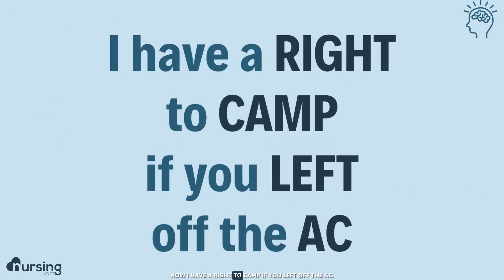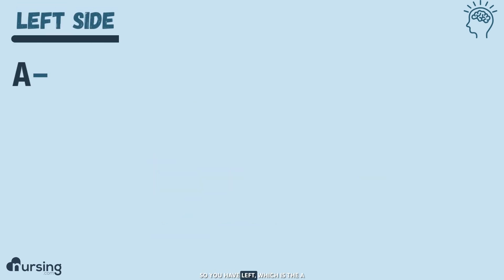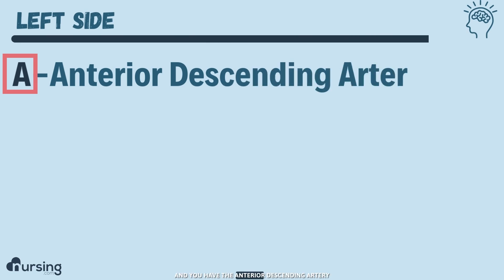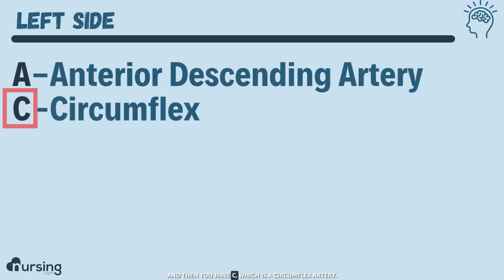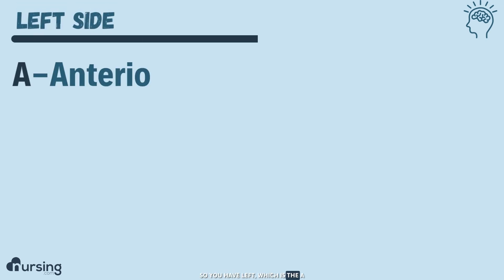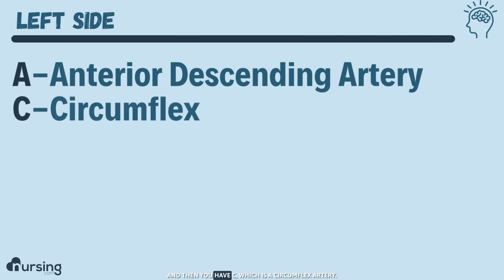'I have a right to camp if you left off the AC.' Now let's look at the left side of the heart. You have 'left,' which is the A — the anterior descending artery — and then you have C, which is the circumflex artery.